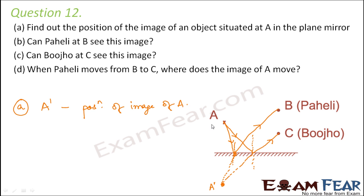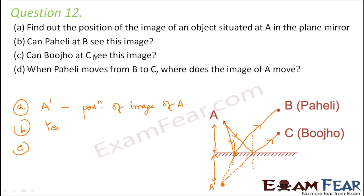Can Paheli at B see this image? Yes, because the reflected ray from A is able to reach Paheli's eyes. Can Bucho see the image? Yes, again because the reflected ray is able to reach Bucho's eyes. So both Paheli and Bucho can see the image.